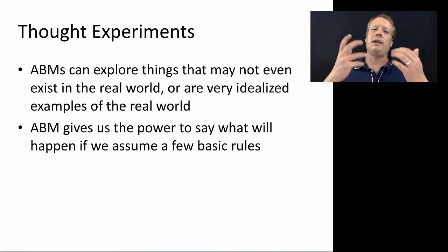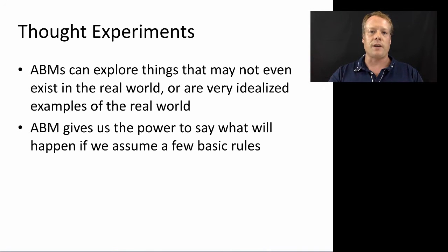And in fact, we can use these both in real world examples or in thought examples. So we could postulate a series of things about the way the world might work or about the way an artificial world might work. And then we can create that within the agent-based model and allow us to think through what the ramifications of that theory might be, even if that theory could never really exist in the real world. And they give us the power to say what will happen if we assume those basic rules and then extrapolate up from that.